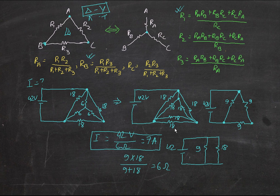Delta-Y and Y-Delta is a really easy conversion to do. You'll know on your own when to apply it — if you see circuits in a Delta format or a Y format. The Pi format would look like this, so this is the Pi circuit we were talking about.